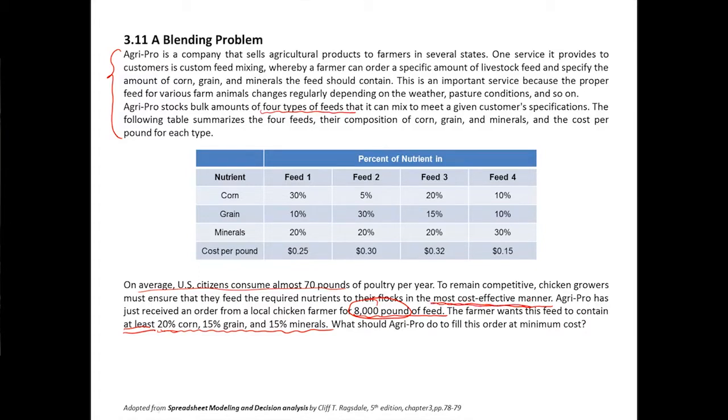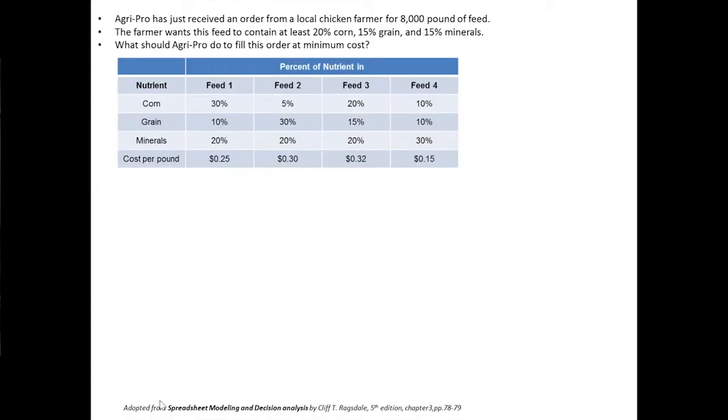Then what about the objective? We highlighted something here. We want to do it the most cost effective way - that means we want to minimize the total cost. If there were no requirements for those percentages, we'd just put feed one or feed four because that costs less money. But the corn and grain percentage is pretty low, so we're not able to fulfill these requirements.